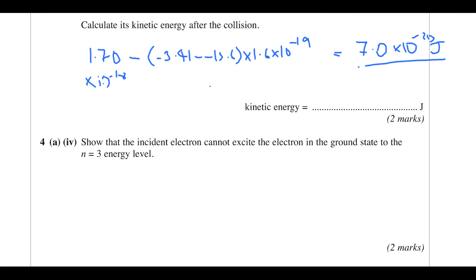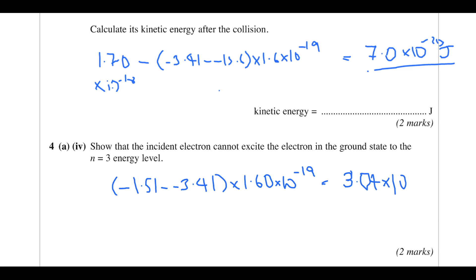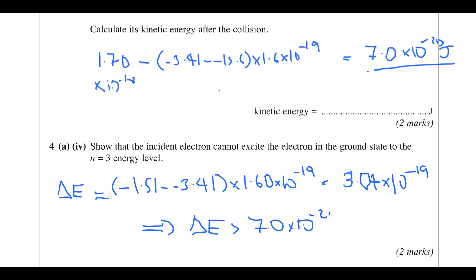Show that the incident electron cannot excite the electron in ground state to the n = 3 level. Work out how much energy is required — calculating the difference in energy levels from n = 2 to n = 3 and converting to joules gives 3.04 times 10 to the minus 19 joules. We can show that this change in energy is greater than the kinetic energy left over, so it cannot occur.